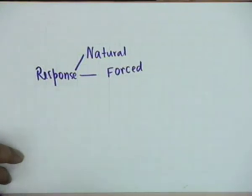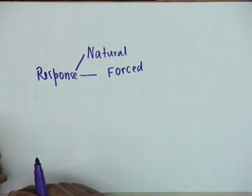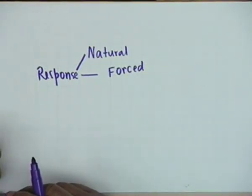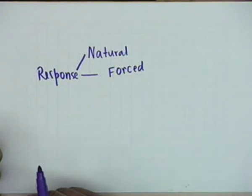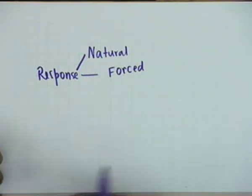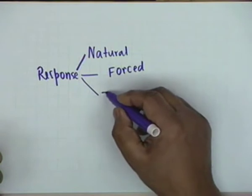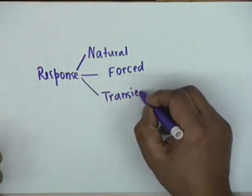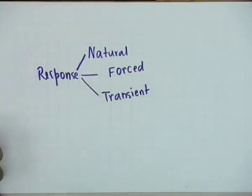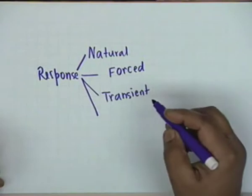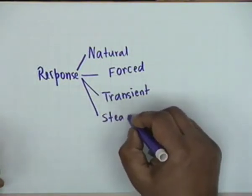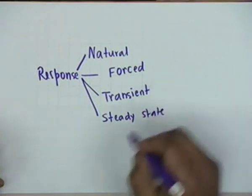In general, a circuit may have excitations — voltage sources or current sources — and also internally stored energies like electrostatic energy in capacitors and electromagnetic energy in inductors. Therefore, in general, the response of an electrical circuit shall be a combination of natural response and forced response. Two other terms introduced are transient response, which occurs at the beginning of excitation, and steady state response, which is what you get after a long time has passed.